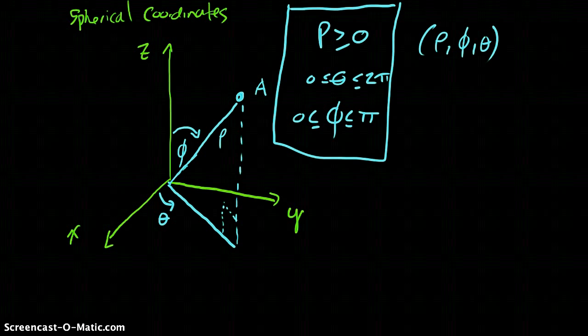Okay, now I'm going to talk about how do we describe this point A that has spherical coordinates rho, phi, and theta.